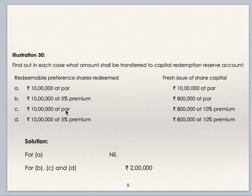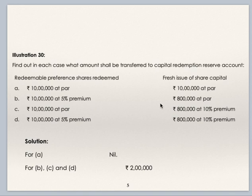Case 3: redeemable preference shares redeemed 10 lakhs at par, fresh issue 8 lakhs at 10% premium. By fresh issue they are getting 8 lakhs plus 10%, that is 8 lakhs 80,000, out of which 8 lakhs goes to capital and 80,000 goes to securities premium. So capital account debit 10 lakhs, capital account credit 8 lakhs — 2 lakhs to be transferred to CRR.